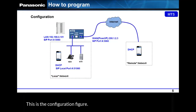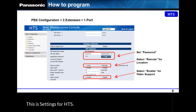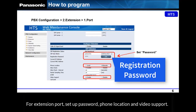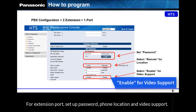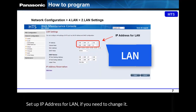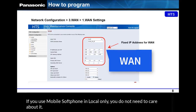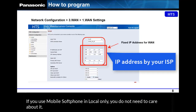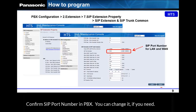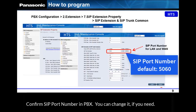This is the configuration figure. For HDS settings, configure the extension port: set up password, phone location, and video support. Set up the IP address for LAN if you need to change it. Set up a fixed IP address for WAN. If you use Mobile Softphone in local only, you do not need to care about it. Confirm the SIP port number in the PBX — you can change it if needed.